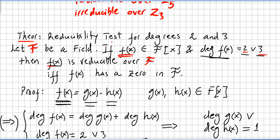So this is the reducibility test only for degrees 2 and 3. If F is a field and f(x) is a polynomial in F[x] with degree 2 or 3, then f(x) is reducible over the field if and only if f(x) has a zero in the field.